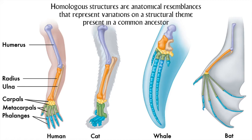True that a cat may use their forelimbs like an arm in some circumstances, but most of the time they use them to walk upon, and a cat cannot throw a split-fingered fastball. Whales use their forelimbs for swimming — the phalanges have been thickened and elongated and become completely covered in muscle and skin. In the bat, the arm bones are covered with a thin membrane of skin, all the better to fly with, as wings.